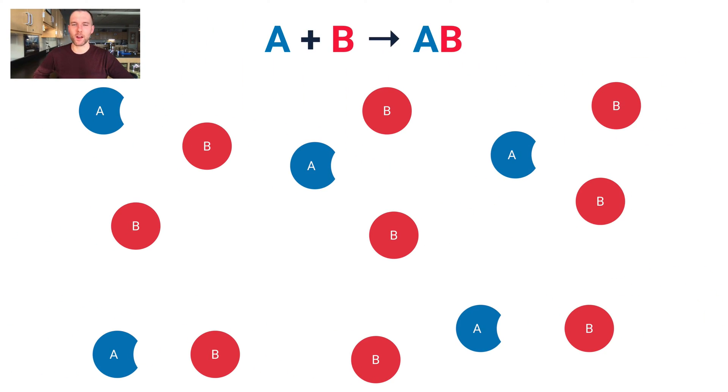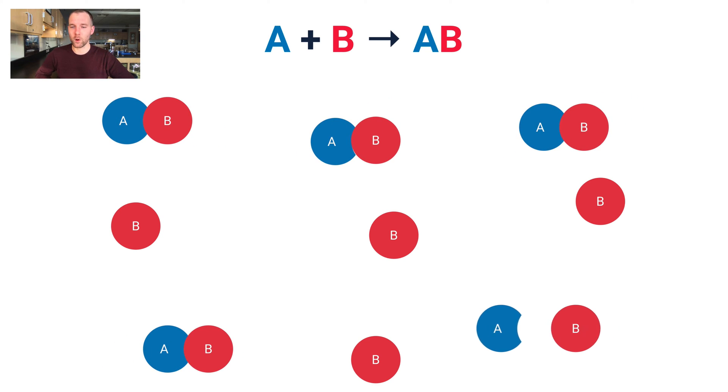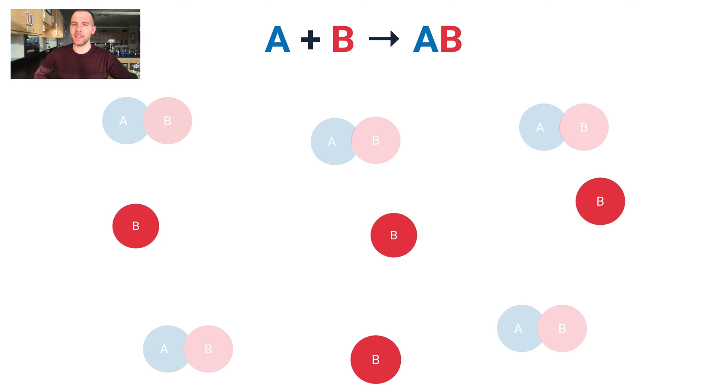Let's say I had this generic equation: A plus B makes AB. I've got all these A's and B's on the screen here in a beaker. This reaction starts to take place and AB starts being formed, but then it stops right here. That's because there's no more A to react.